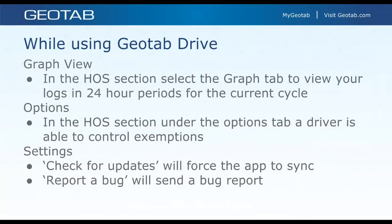The graphs view, found on the HOS page under the graphs tab, shows 24-hour periods of your logs in graph format — the traditional four-line view for drive, off-duty, on-duty, and sleeper berth. Under the options tab, you can enable and disable exemptions such as adverse driving condition, personal conveyance, and yard move — the three most popular exemptions.